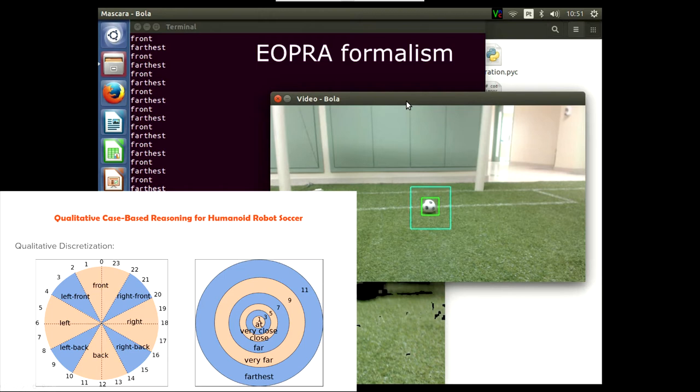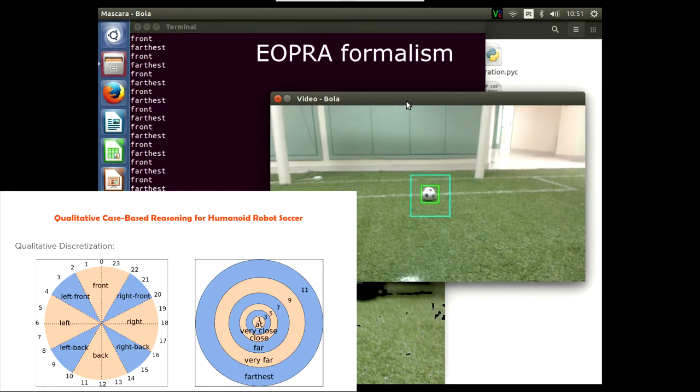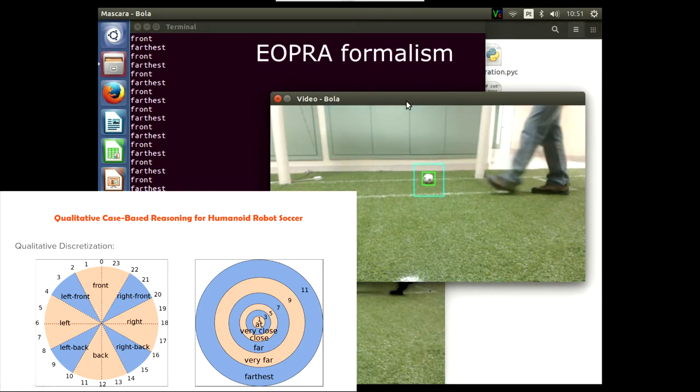So, the qualitative orientation is composed of 8 regions, named left, right, front, back, left front, right front, left back and right back.